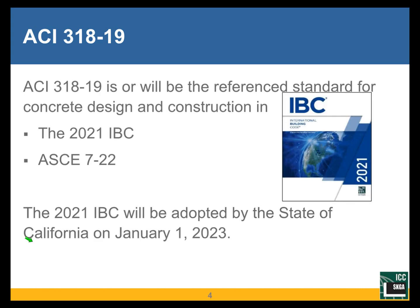ACI 318-19 is already the reference standard in the 2021 IBC, which has been out for a while. It will also be the reference standard in ACI 722, which is in final stages of development. The 2021 IBC will be adopted by the state of California on January 1st of 2023. California is about the only state whose code has a fixed date for adoption — state law requires the code change every three years and incorporate the latest edition of the IBC, so January 1, 2023 is a firm date.